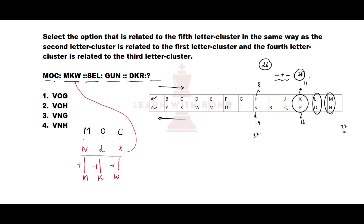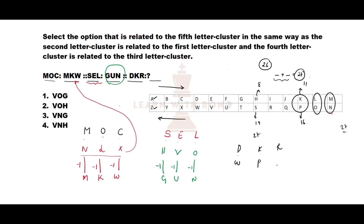Verifying with the second cluster SCL: the opposite of S is H, the opposite of C is... wait — opposite of S is H, opposite of E is V, opposite of L is O. Subtracting 1: H minus 1 is G, V minus 1 is U, O minus 1 is N — giving GUN. Now for DKR: opposite of D is W, opposite of K is P, opposite of R is I. Subtracting 1: W minus 1 is V, P minus 1 is O, I minus 1 is H. The answer is VOH, which is option number 2.